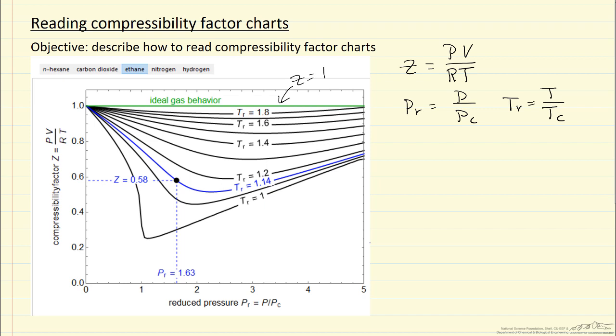That would say the volume is going to be significantly less than what we calculate from the ideal gas law. Because I'm only using two parameters here, the critical pressure and the critical temperature for the plot,